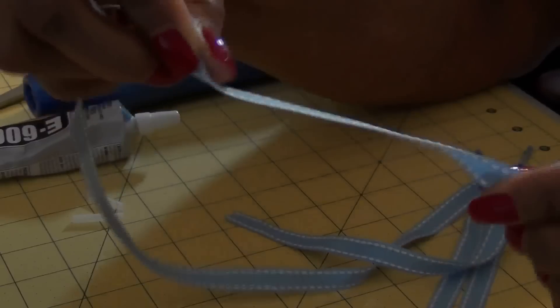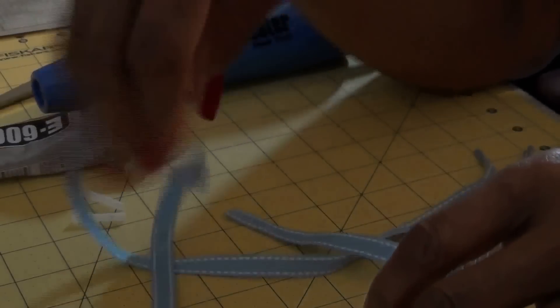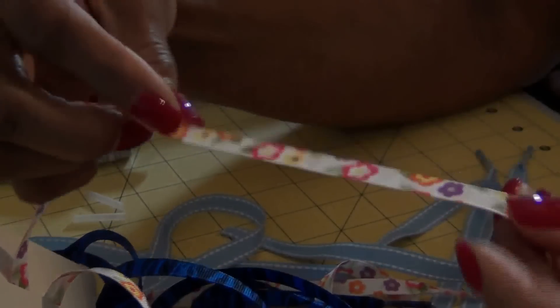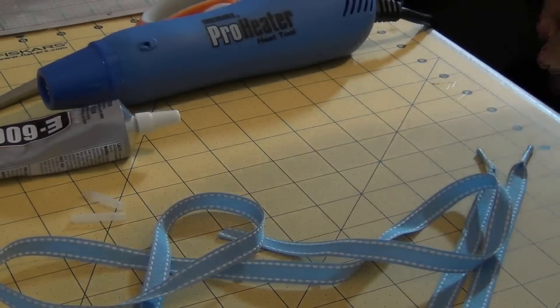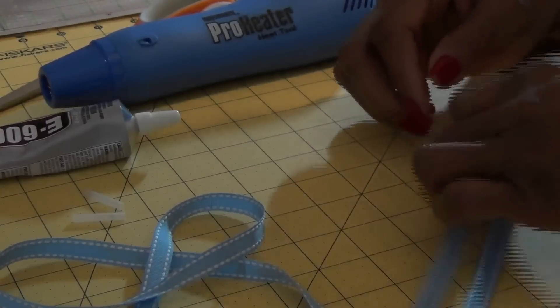This is 3/8 of an inch wide ribbon. Try to use the double-sided where the pattern's on both sides if you can, like the ones I have here. You can see that the pattern is actually on both sides of the ribbon. 3/8 works best.